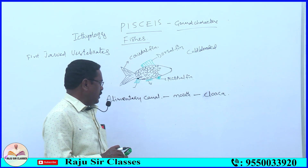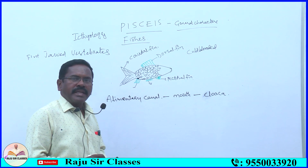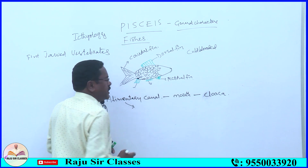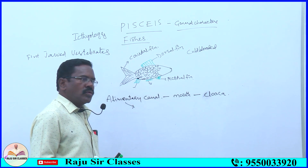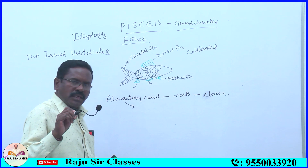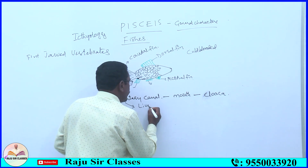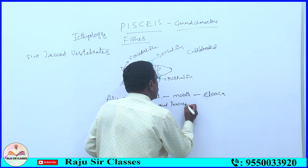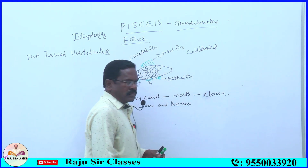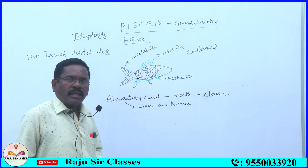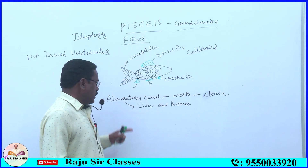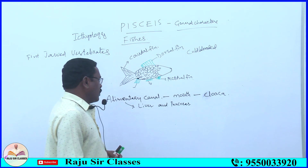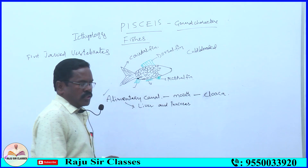The alimentary canal is associated with — connected with — liver and pancreas. This is also a common character in all vertebrates, from fishes to mammalia. In all vertebrates, the alimentary canal is associated with liver and pancreas.